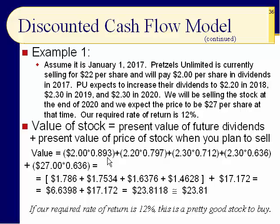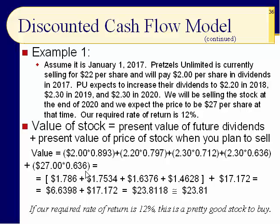Use the present value table. The cash flows are: $2 in 2017, $2.20 in 2018, $2.30 in 2019, and $2.30 in dividends plus $27 from the stock sale in 2020. So we're going to get $2 in 2017, $2.20 in 2018, $2.30 in 2019, $2.30 in dividends in 2020, and $27 from the sale of the stock in 2020. How do we discount — bring those back to the present?